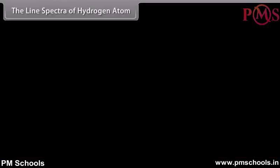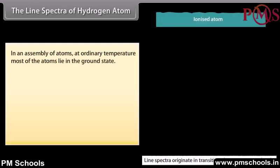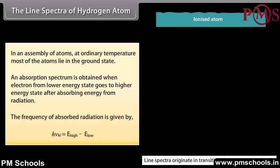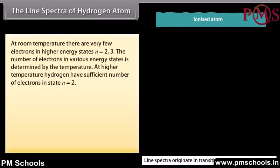The line spectra of hydrogen atom. In an assembly of atoms at ordinary temperature, most atoms lie in the ground state. If white light is passed through such an assembly of hydrogen atoms, the transmitted light will not have radiations of various wavelengths — this is the absorption spectrum corresponding to the Lyman series. An absorption spectrum is obtained when an electron from a lower energy state goes to a higher energy state after absorbing energy from radiation, with frequency given by hν = E_high − E_low. At room temperature there are very few electrons in higher energy states.